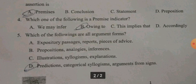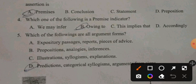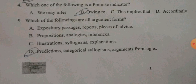Question 4: Which one of the following is a premise indicator? Not conclusion indicator, premise indicator. A. We may infer. B. Owing to. C. This implies that. D. Accordingly. The answer is B, owing to.